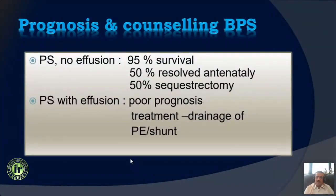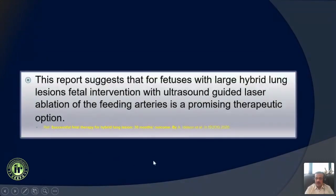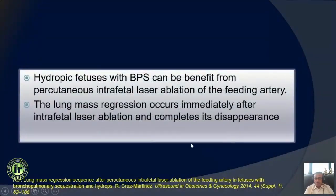For sequestration with no effusion, there is very good survival and almost 50% resolve, though a good number would require lobectomy after birth. With effusion, the prognosis is bad. If there is pulmonary sequestration with effusion, it is advised to drain the fluid or put a shunt from the pleural cavity into the amniotic fluid and ablate the feeding vessel with laser or RFA. This is reported to have a very good effect on benefiting the fetus significantly in those developing hydrops and causing the lesions to regress.